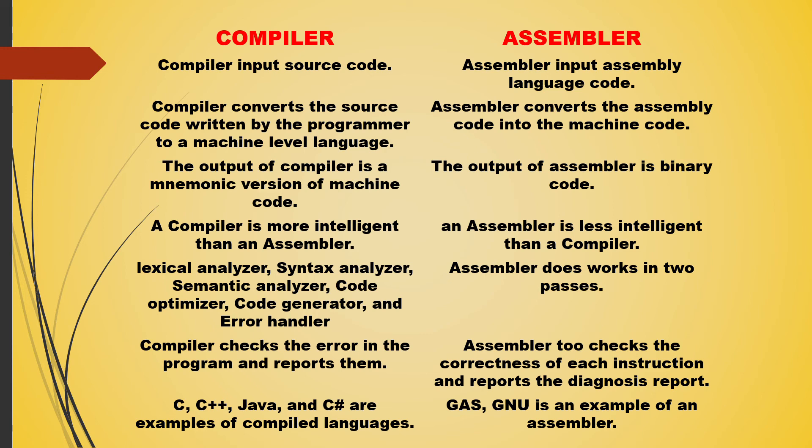Languages such as C, C++, Java, and C# are examples of compiled languages, while GAS and GNU are examples of assemblers.